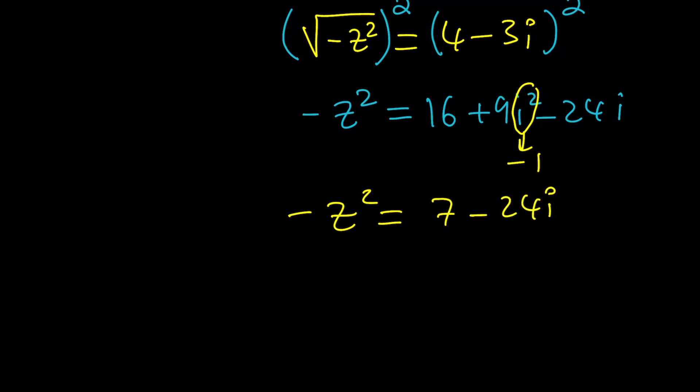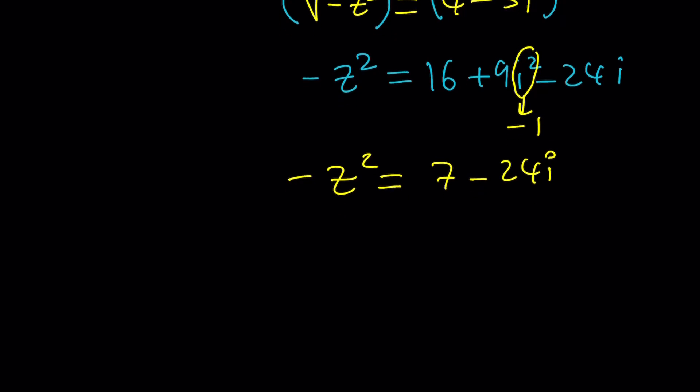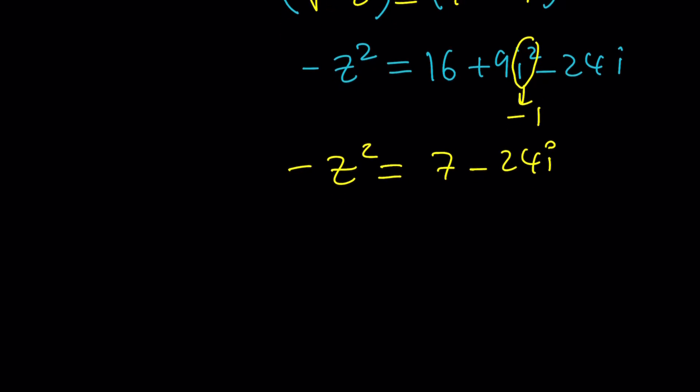This gives us negative z squared equals 16 minus 9, which is 7 minus 24i. That number should look familiar to you. A complex number is made up of two numbers, it's two-dimensional like a vector. 7 and 24 are special numbers - 7, 24, 25. I'm going to negate both sides to get to z squared first.